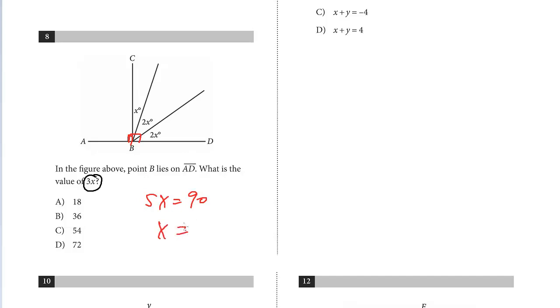We've got 2x plus 2x plus x, so that's 5x equals 90. If 10x equals 90, that'd be 9, so 5x is going to be twice that, which is 18. So 3x is just going to be 3 times 18, and that is 54. The answer is C.